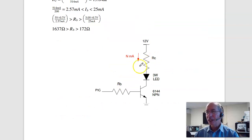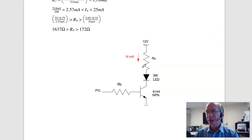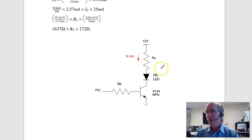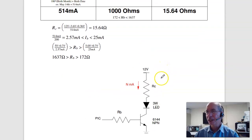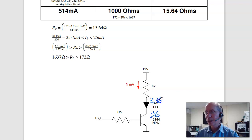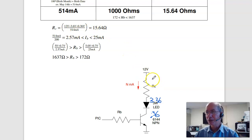Problem 2 is to find RC and RB so that the current is 514 milliamps. This is a 3-watt LED with about a 3-volt drop across it. There's 0.36 volts across the transistor when it saturates, making 3.36 volts total. The remaining voltage goes across RC. At 514 milliamps, that makes RC 15.64 ohms.